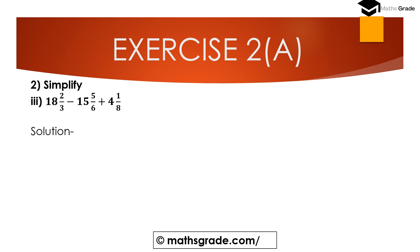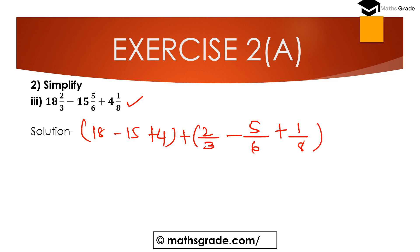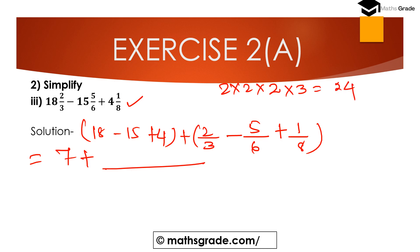Now question number 3: 18 and 2/3, minus 15 and 5/6, plus 4 and 1/8. First, add all the whole numbers separately: 18 minus 15 plus 4. And separately handle the proper fractions: 2/3 minus 5/6 plus 1/8. Now find out the LCM of 3, 6, and 8. Prime factorization of 3 is 3; prime factorization of 6 is 3 multiplied with 2; prime factorization of 8 is 2 multiplied with 2 multiplied with 2. The maximum number of 2s is 3 times, so LCM = 2 × 2 × 2 × 3 = 24.